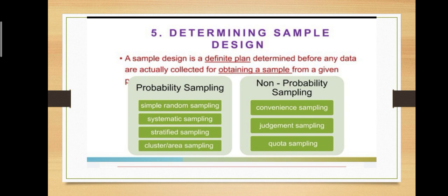The types of non-probability samplings are convenience sampling, judgment sampling, quota sampling.